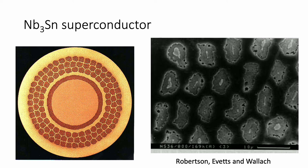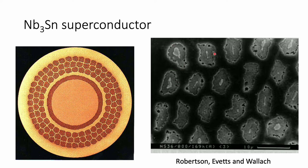Superconductors used in MRI scanners are made from the compound Nb₃Sn, but this compound is quite brittle. So pure niobium — which is very ductile — is embedded inside bronze (a copper-tin alloy) and drawn into wires. The composite wire is then heat-treated so that tin reacts with pure niobium to form the Nb₃Sn compound. Because of the different diffusion rates of niobium and tin, porosity is created around the filaments of the niobium-tin compound — a direct consequence of the Kirkendall effect.